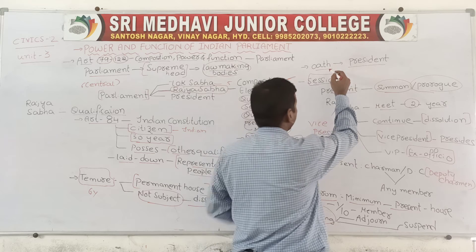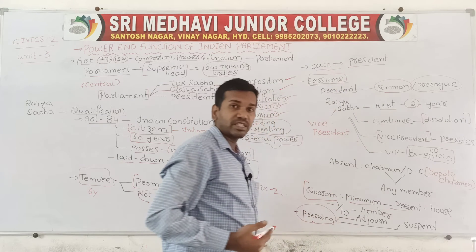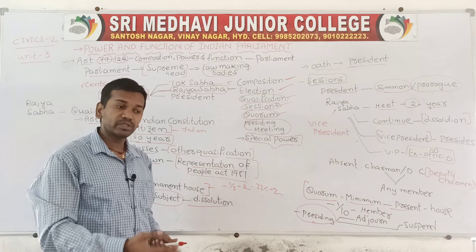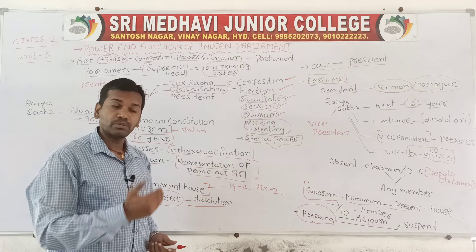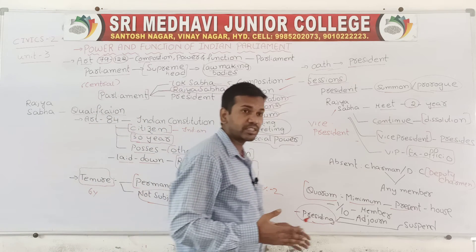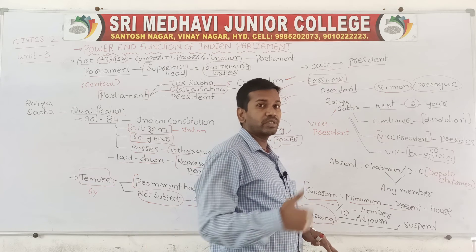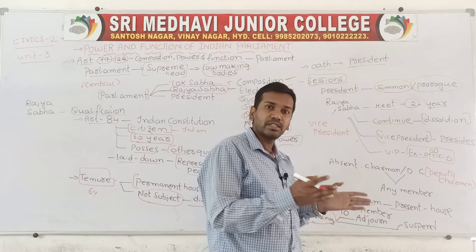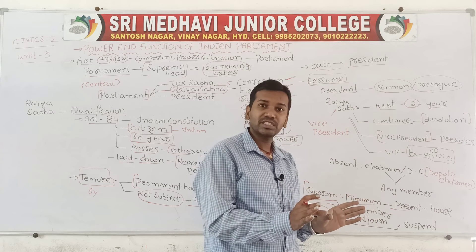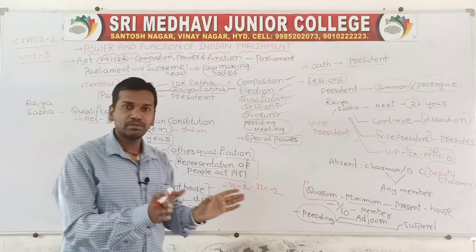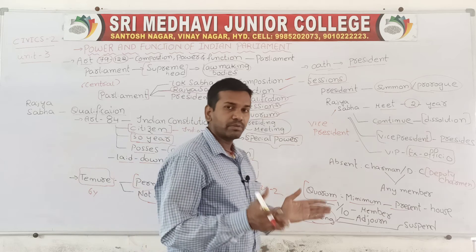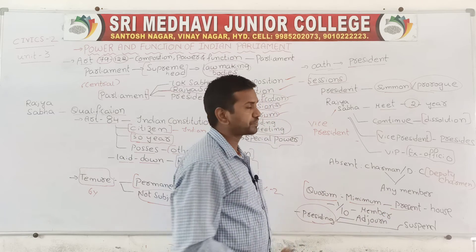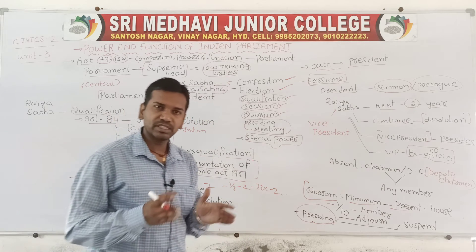When members of Rajya Sabha are selected, they take an oath in front of the President — an oath is a promise before service to discharge work efficiently. The meetings of both Lok Sabha and Rajya Sabha are under the control of the President. For joint sittings of both houses, the President conducts the meeting. But normally for Rajya Sabha, the Vice President as chairman conducts the meeting, which is held two times per year.